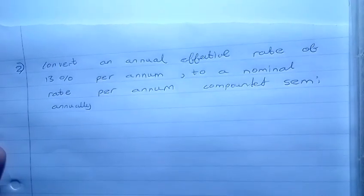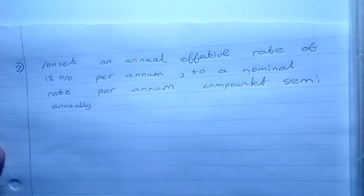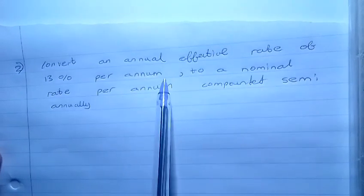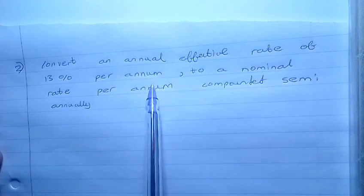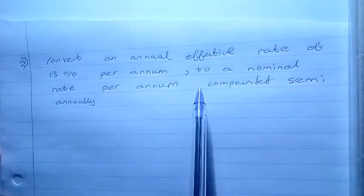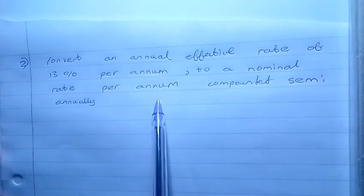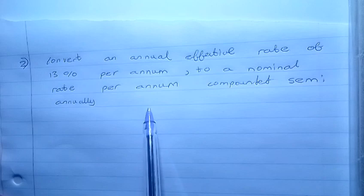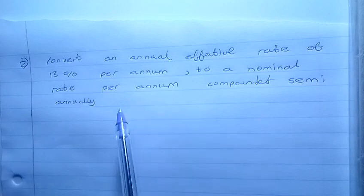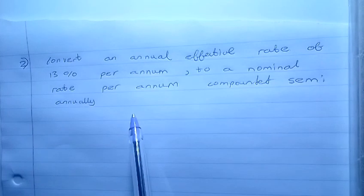Our second example asks us to convert an annual effective rate of 13% per annum to a nominal rate per annum compounded semi-annually. Now here they want us to change an effective rate to a nominal rate compounded semi-annually. Semi-annually means times 2, 2 times per year.